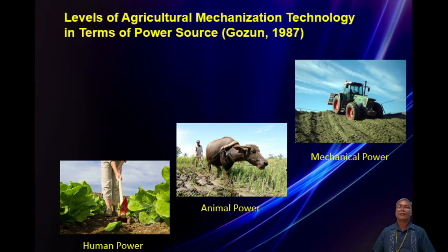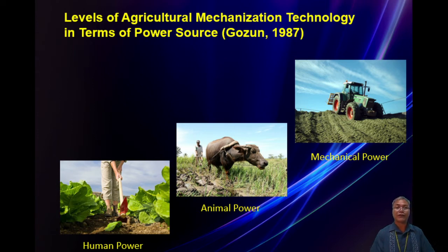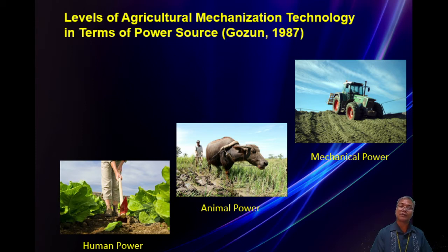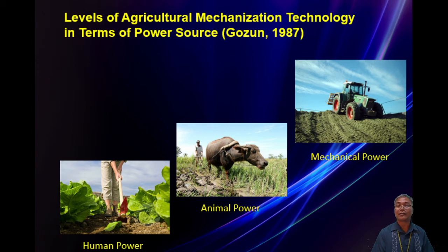These are the different levels of agricultural mechanization technology in terms of power source. If you have only a garden, you use manual power. If your size is about one to two hectares, you can apply animal power. If it's really very big — about 10 to 50 hectares — you really need to have mechanical power or tractors.